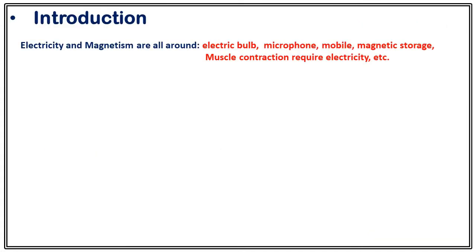The very first question is: why do we want to study electricity and magnetism? The obvious answer is that electricity and magnetism are all around. In our household, an electric bulb needs electricity, a microphone and mobile need electricity. Storage in your computer is based on magnetic storage, so we need magnetism. Even muscle contraction requires electricity. So electricity and magnetism are all around.